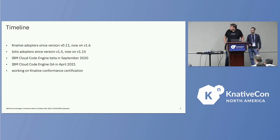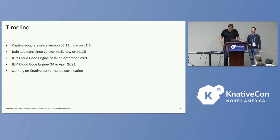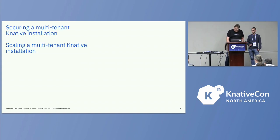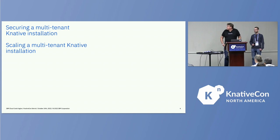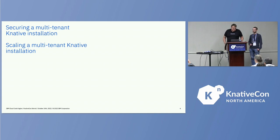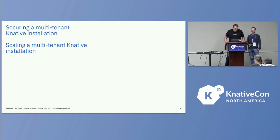Similarly for Istio, which we use as a service mesh — we started with version 1.5 and are now on 1.15. At the moment we are also working with the community on getting a Knative conformance certification. Since Code Engine is running globally — now in nine data centers around the world with lots of users and services — we've seen use cases that are kind of special. There's not much documentation on running this high number of services multi-tenant, so we want to share what we learned.